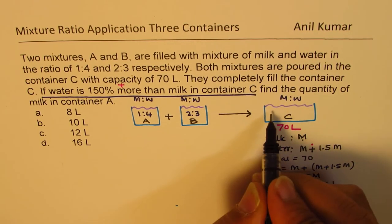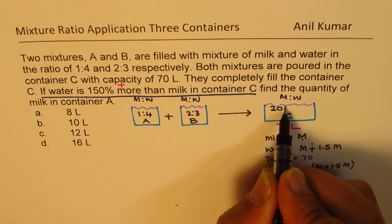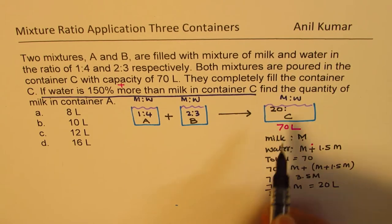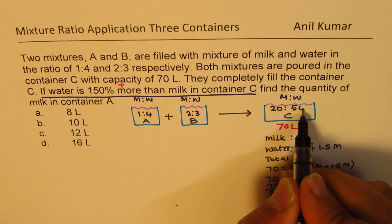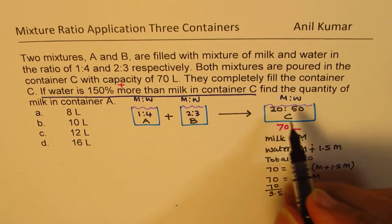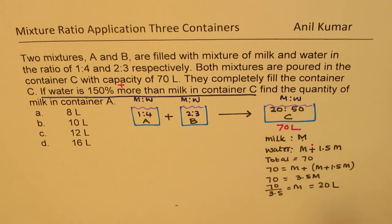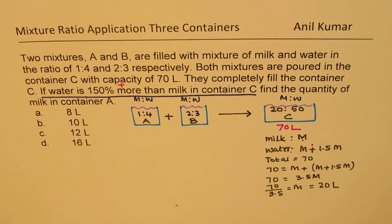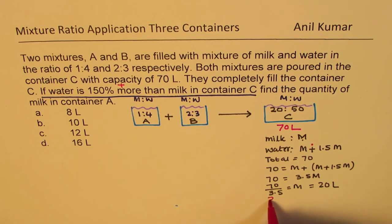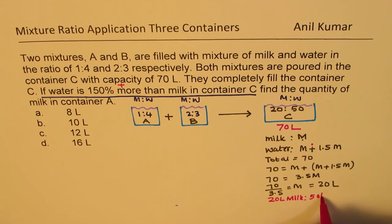So we have 20 of milk. Now since 70 is total, water should be 50. So now we know the capacity, the ratio is 2 to 5, and the quantities are 20 and 50. So basically we know that we have here 20 liters milk, 50 liters water. That is what we have in container C.